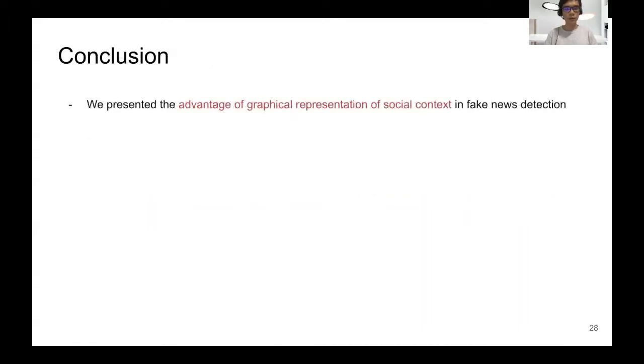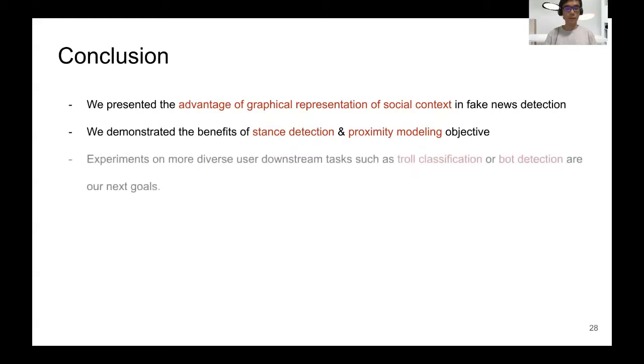So in conclusion, we have presented the advantage of graphical representations of social context in fake news detection. We also demonstrated the benefits of stance detection and proximity modeling objectives in our proposed framework. And we plan to do more experiments on more diverse user downstream tasks, such as troll classification or bot detection.